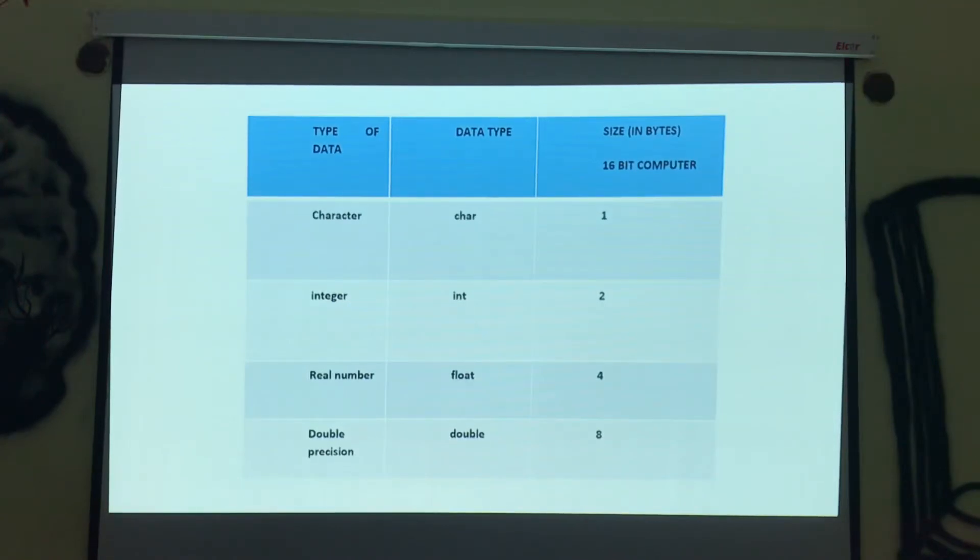Now coming to type of data, data type. We all know that without database, without a database or a memory card, nothing will work. And again this memory card is divided into two things, rows and columns. Like a table, just like this table, it is divided. So character, if I am typing some words, how much bytes it is taking, one. Suppose integer, each and everything, they occupy space in our memory card. For integer, it is two bytes. For real number, float, float means four bytes, double.